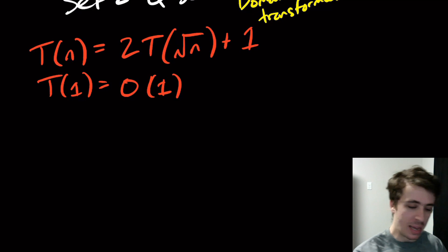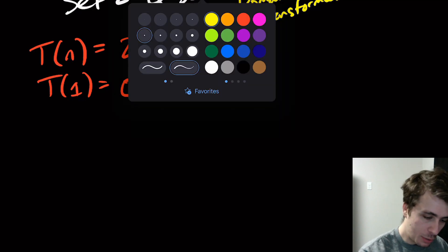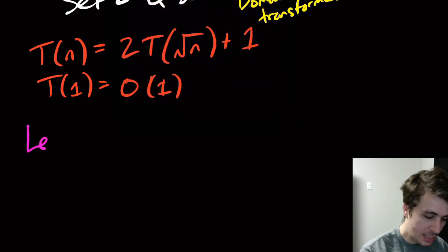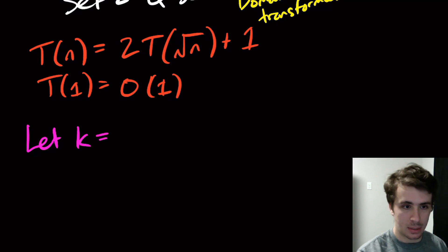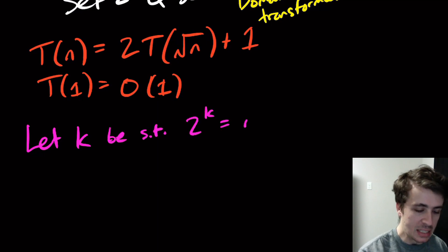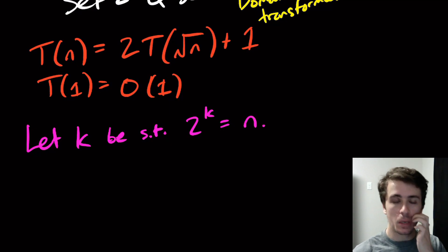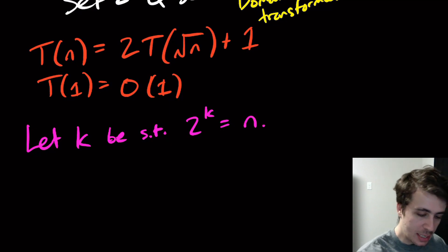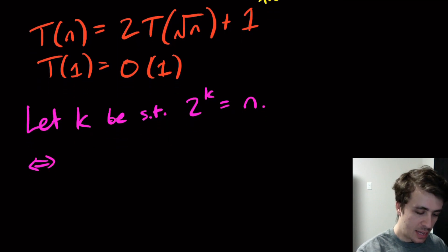The common technique here is to have this be 2 to the power of something equal to n. What I'm going to do here is I'm going to let k be such that 2^k = n.